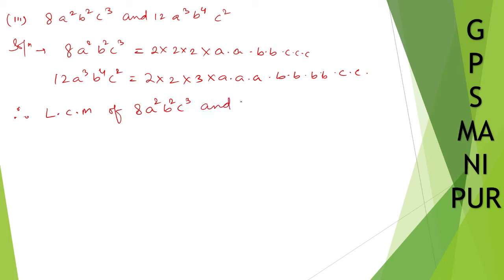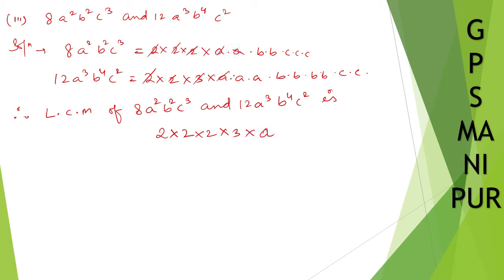Therefore, LCM of 8a²b²c³ and 12a³b⁴c²: for 2 and 2, take 2 into 2, the lone 2 and 3 gives 2 into 2 into 2 into 3. For a: take a into a into a. For b: b into b into b into b. For c: c into c into c.